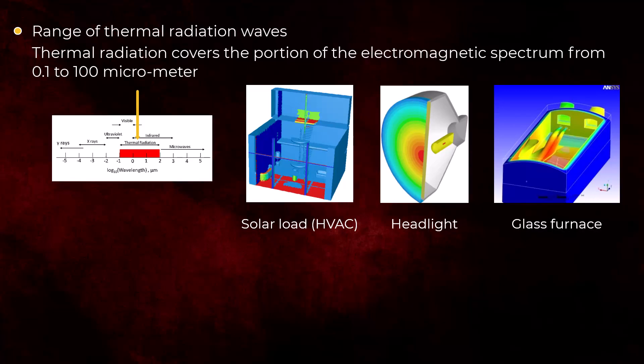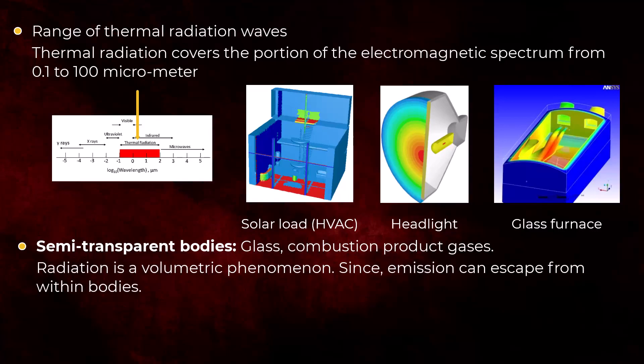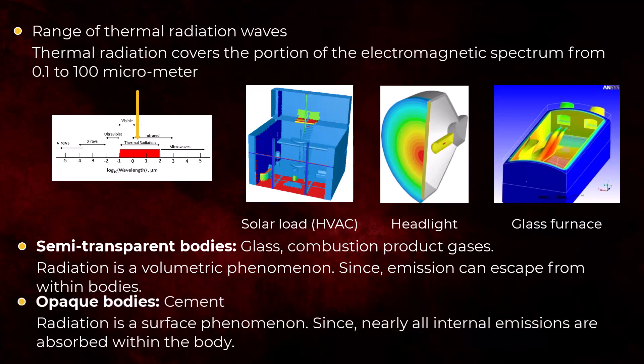Some aspects of radiation that are useful to keep in mind are that in semi-transparent bodies, such as glass or fluids such as combustion product gases, radiation is a volumetric phenomenon because emissions can escape from bodies. However, in opaque bodies, like cement, radiation is essentially a surface phenomenon.